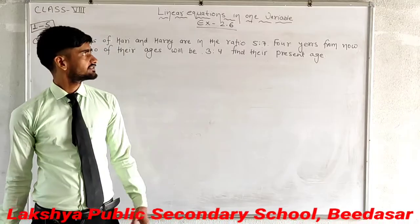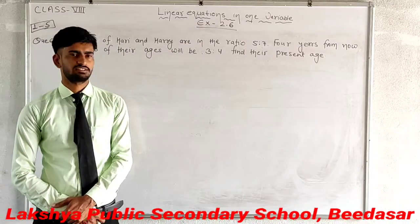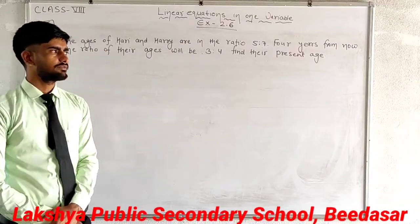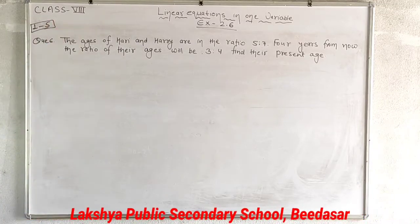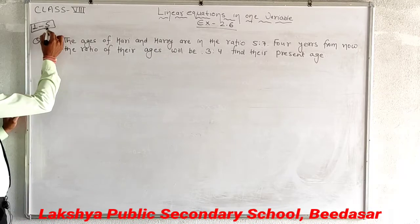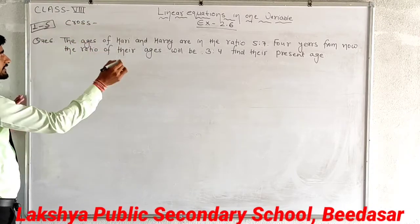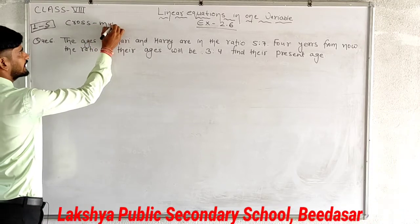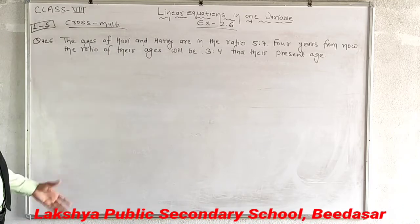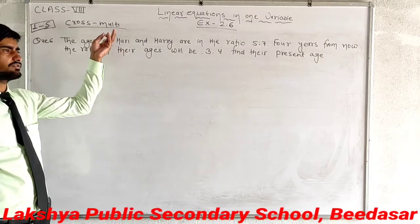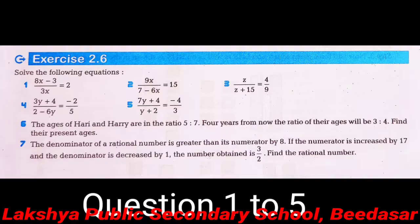Dear students, we have completed Exercise 2.5. Now we are going to start Exercise 2.6. Questions 1 to 5 involve solving linear equations using cross multiplication. Once you cross multiply, you get a linear equation, and then you can separate the variable to find the value of x or y. These are quite easy and are your homework.